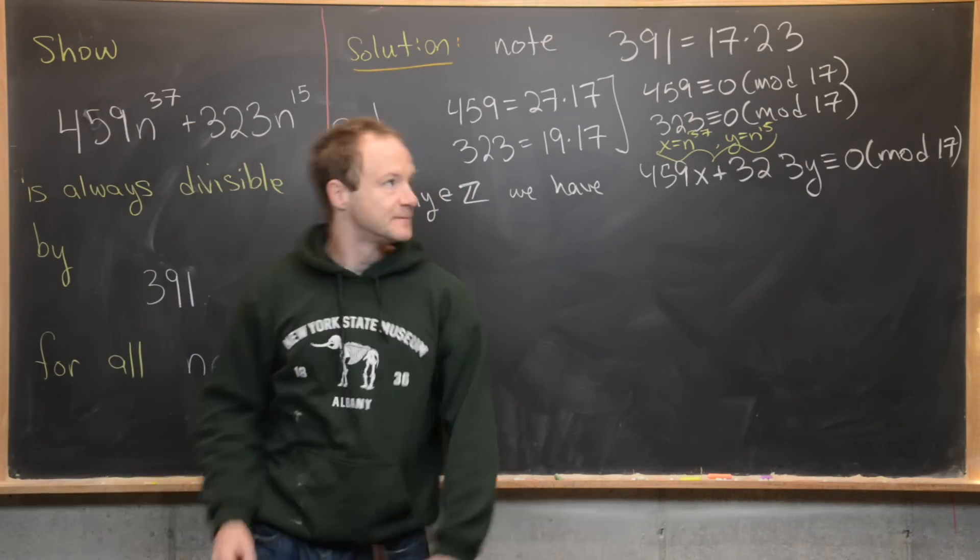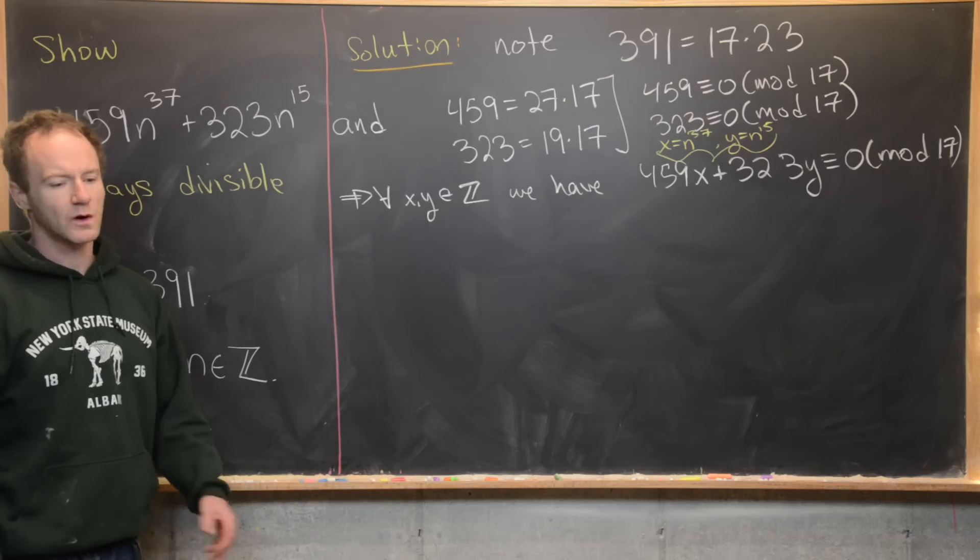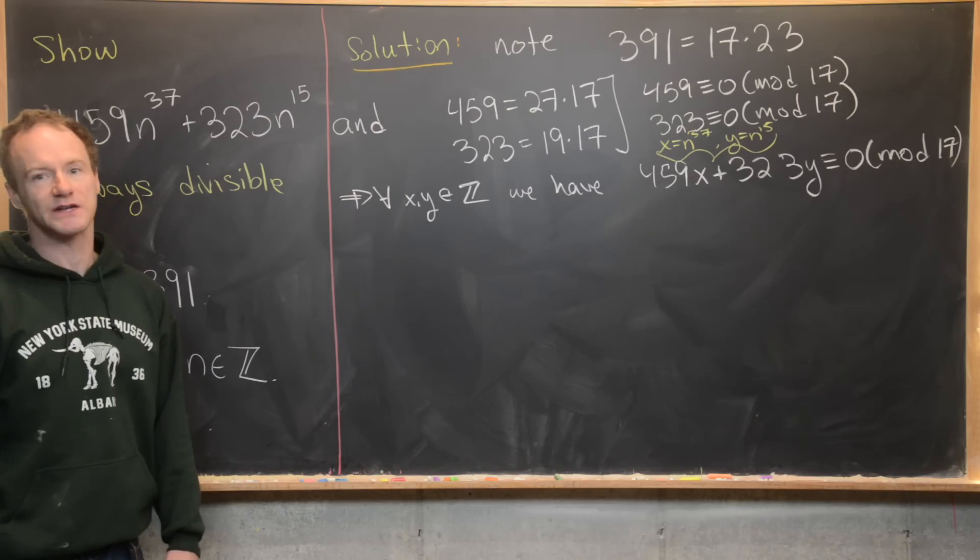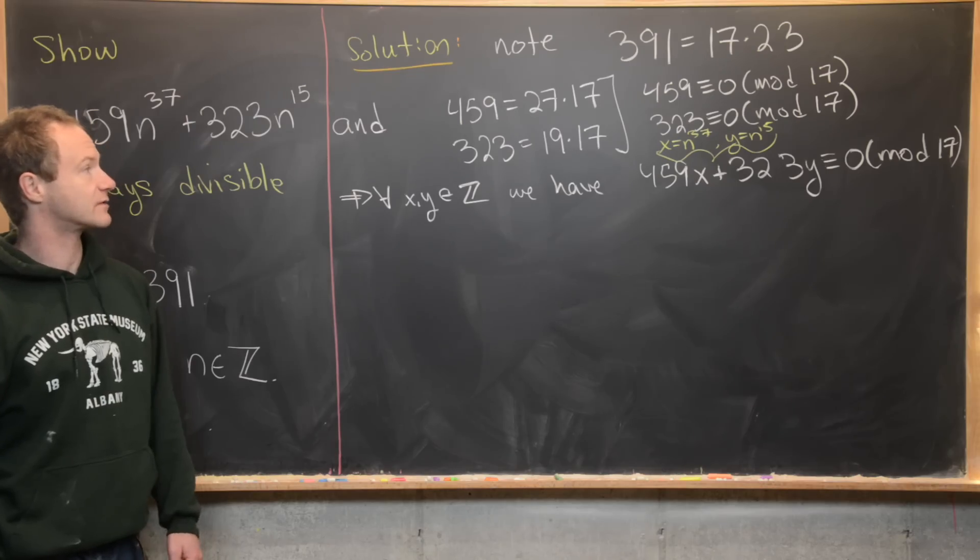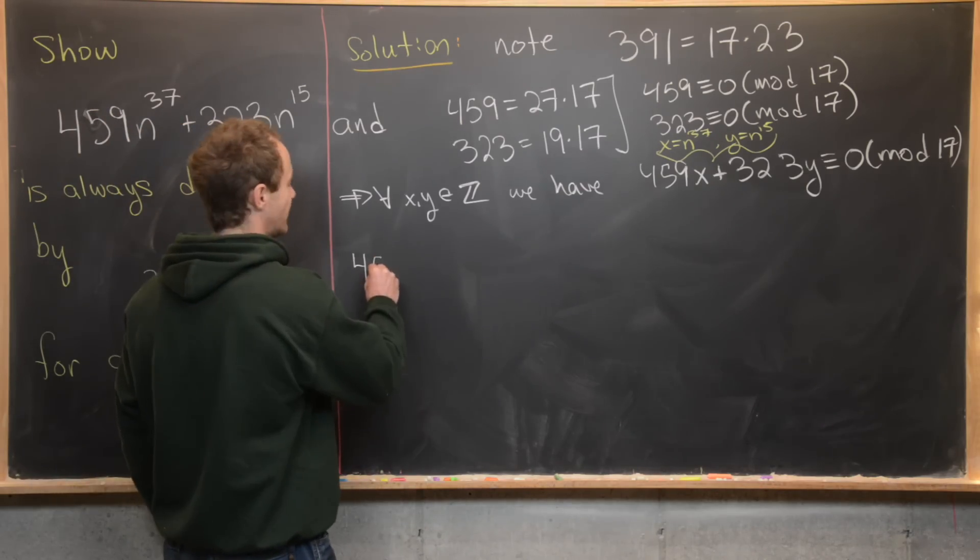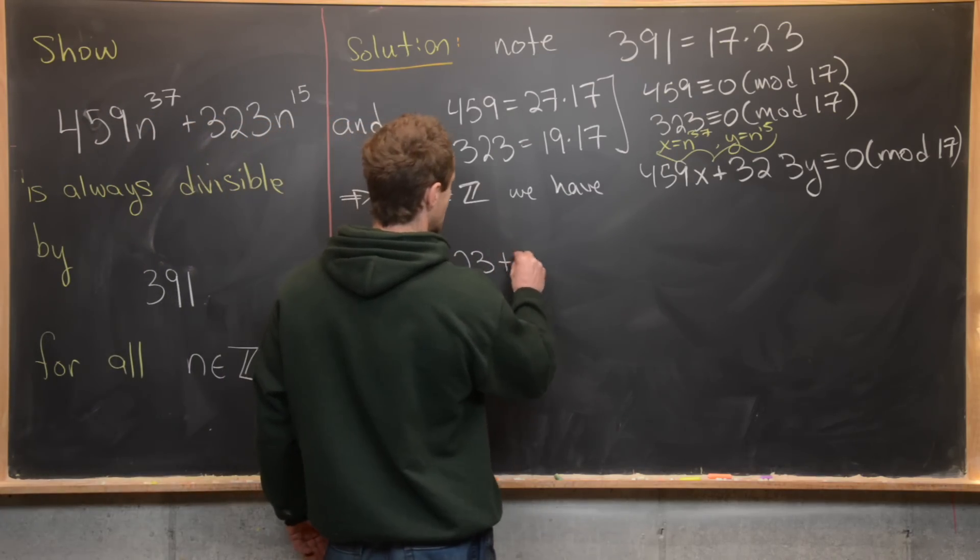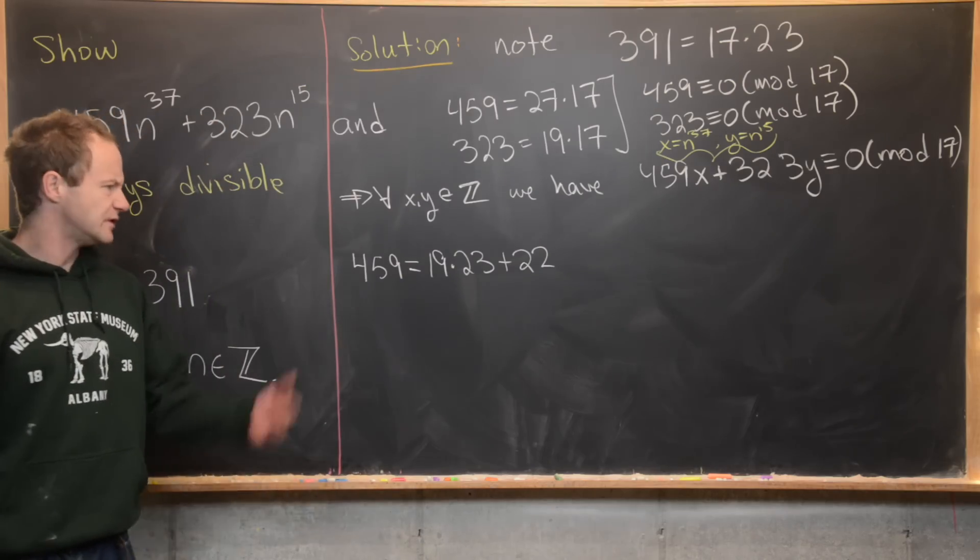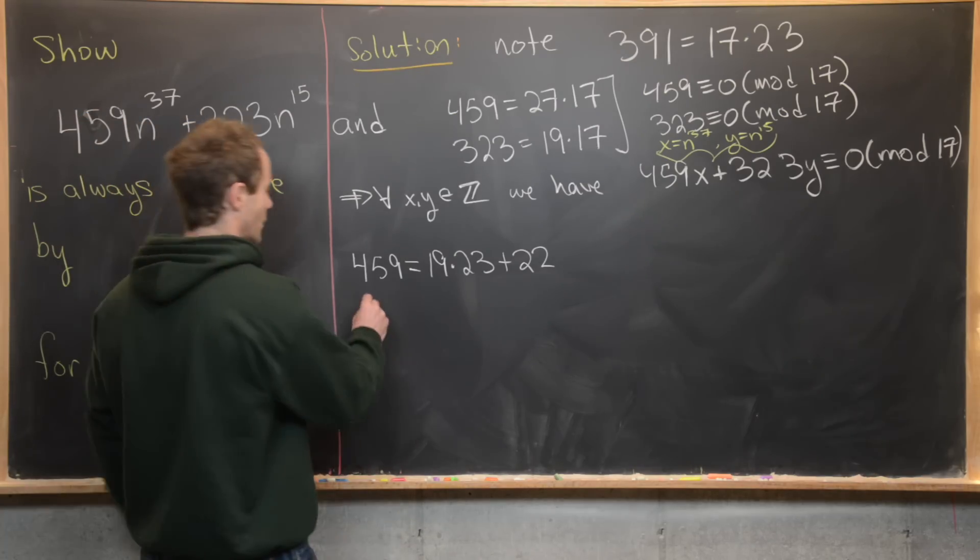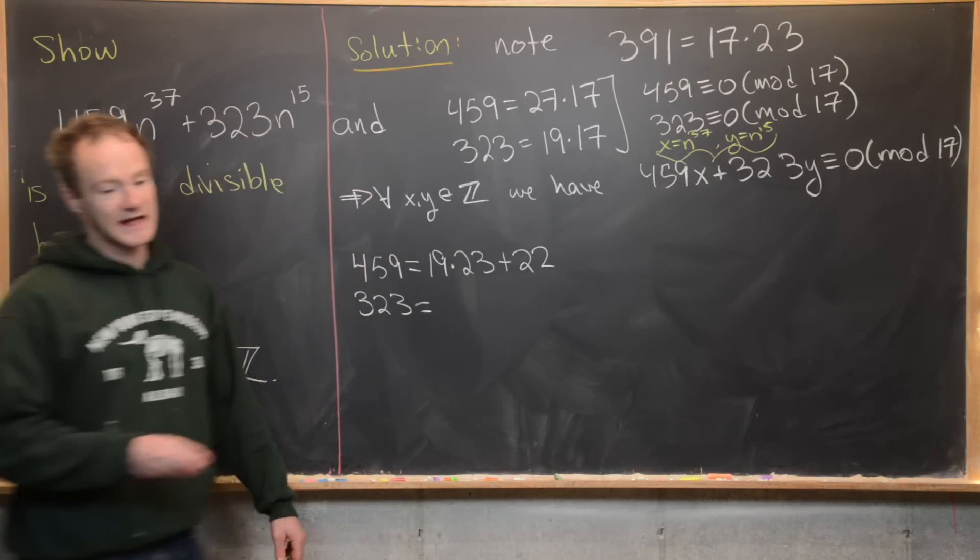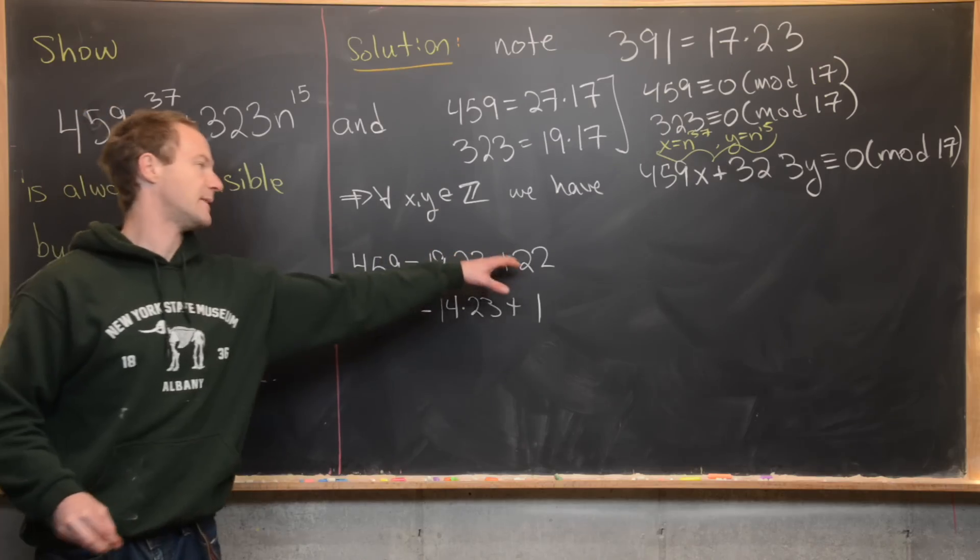So we've got our object is divisible by 17. Now we need to show that our object is divisible by 23, or in other words, it is congruent to zero mod 23. We're going to do that by doing division with remainder of these two numbers and 23. First we can notice that 459 is going to be equal to 19 times 23 plus 22, just like with standard division with remainder.